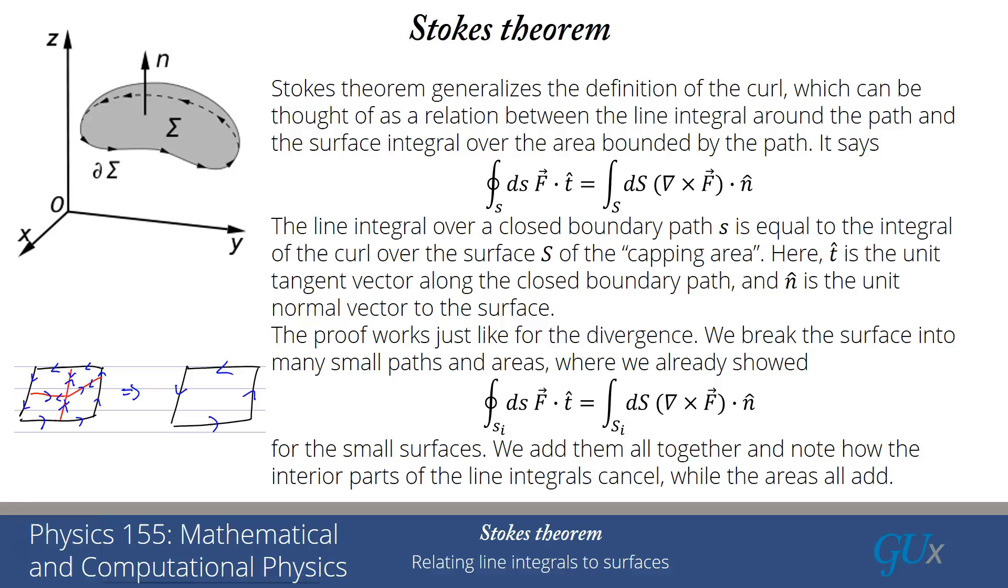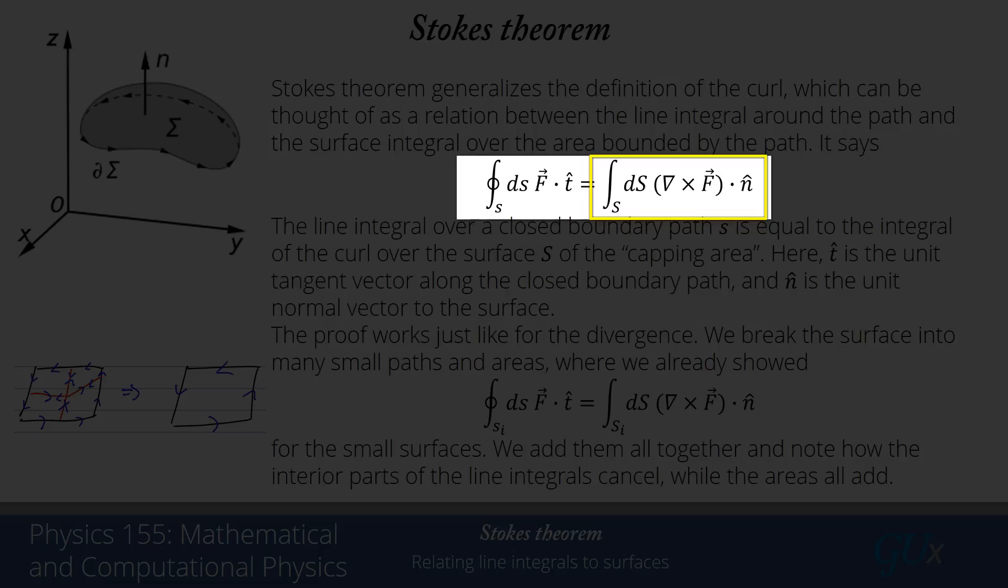Whereas the integrals over each of the individual areas are going to all add. That yields this integral form, which says the line integral over the closed surface of f dot t is equal to the integral over ds of del cross f dot n, or curl of f dot n.